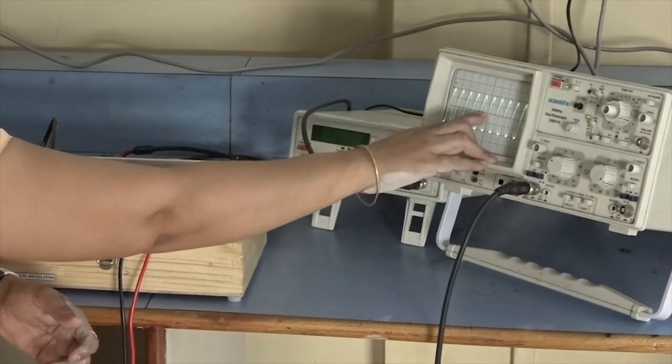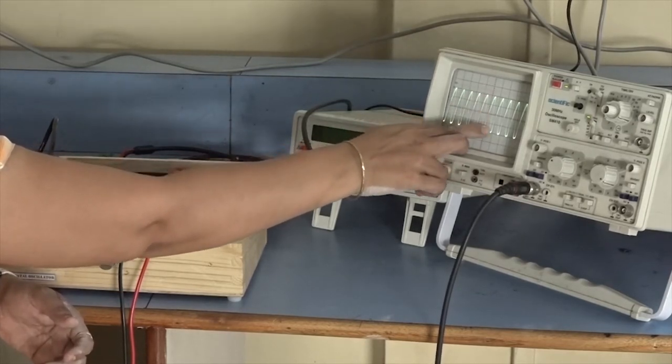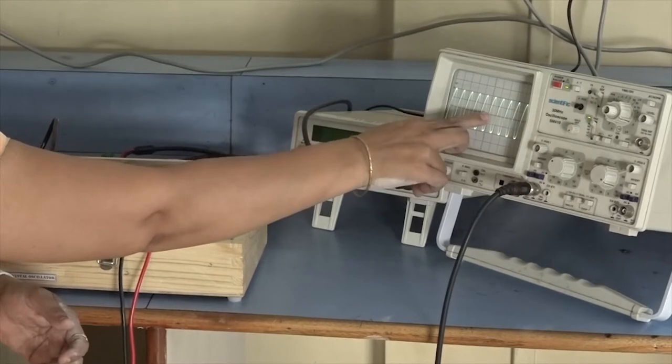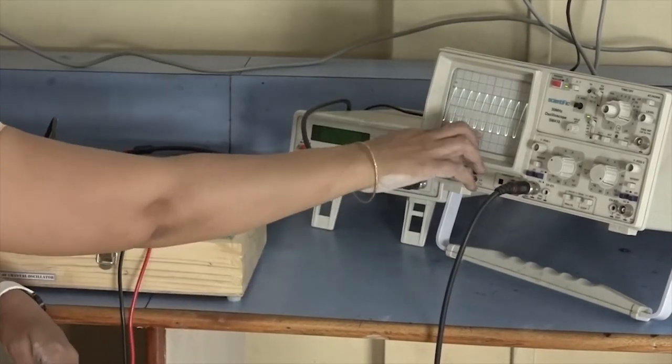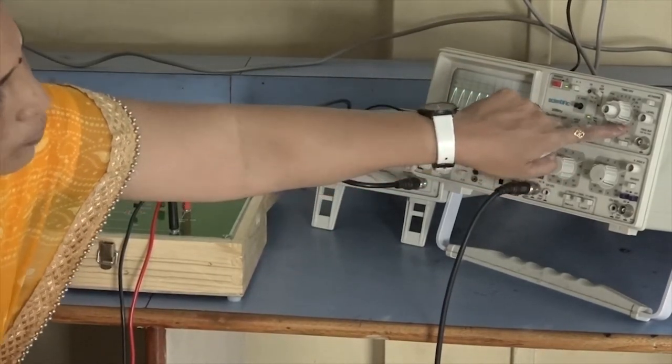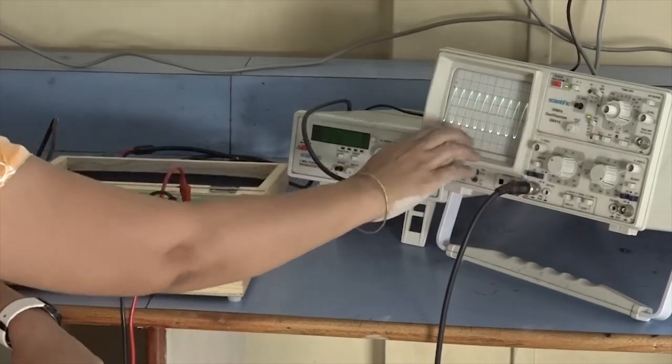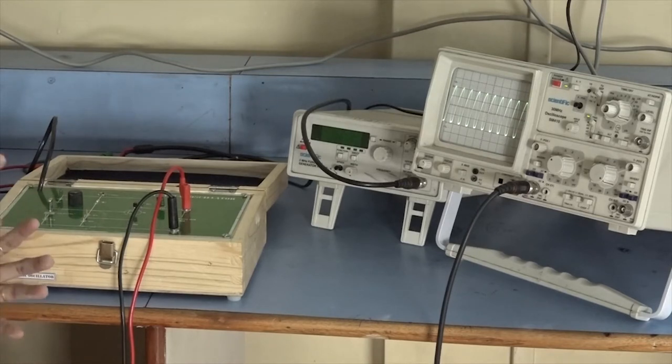See the waveform, positive waveform is starting at this point and the negative waveform will end at this point. The number of divisions will be 1. So 1 division multiplied by time per division knob. Time per division knob is adjusted at 0.5 microsecond, so 1 into 0.5 microsecond. So it will be 0.5 microsecond is the time per division.